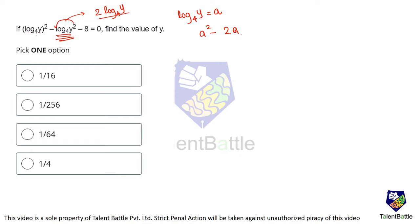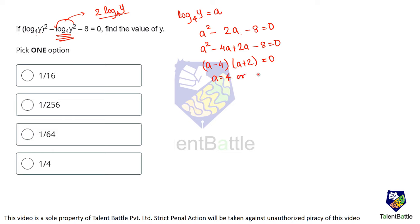After substitution, the equation becomes a squared minus 2a minus 8 equals 0. Factoring: (a minus 4)(a plus 2) equals 0, so a equals 4 or a equals minus 2. Checking a equals 4: log y to base 4 equals 4 means y equals 4 raised to 4, which is 256. There is no option of 256, so this case is not useful.